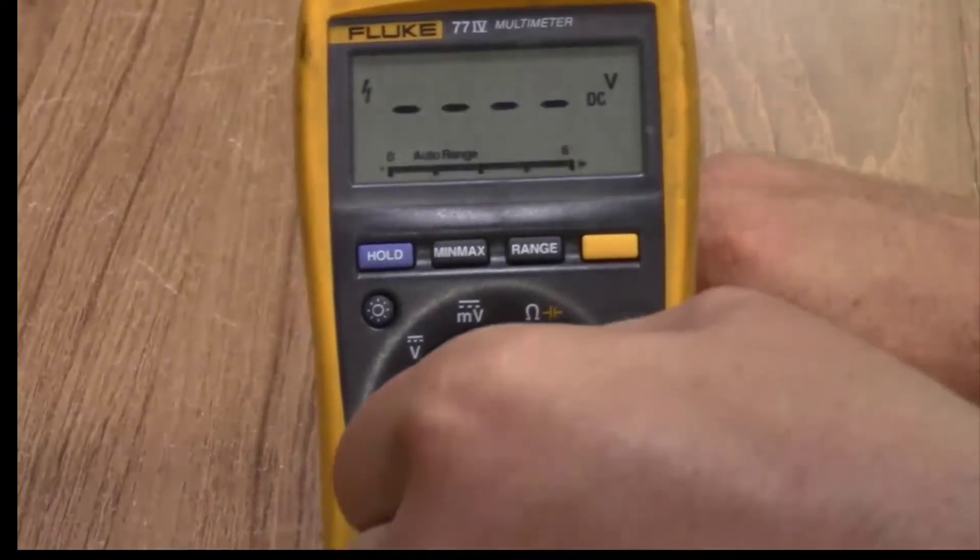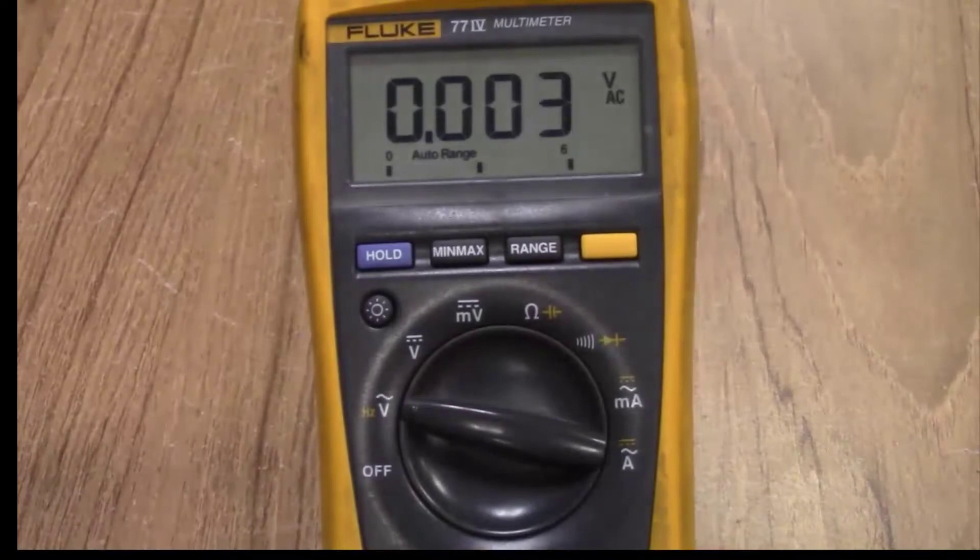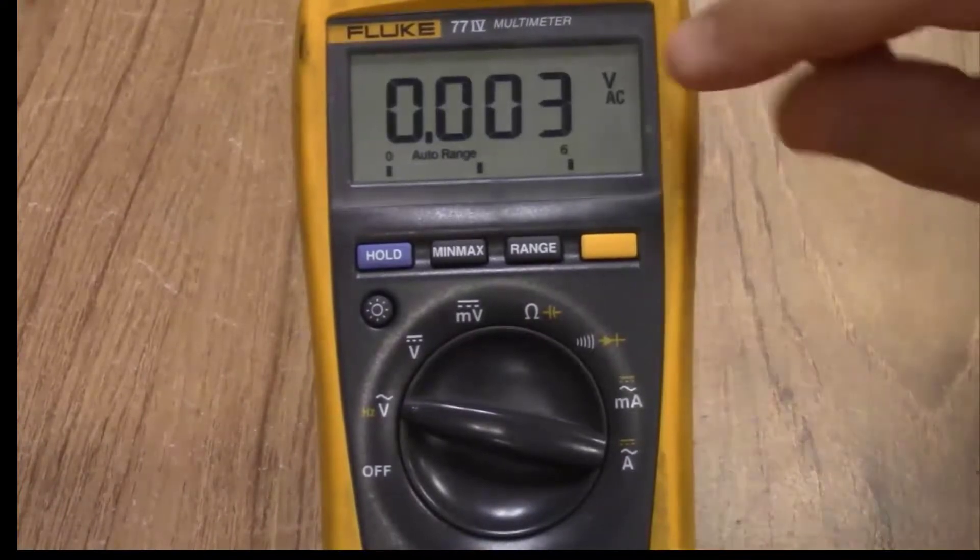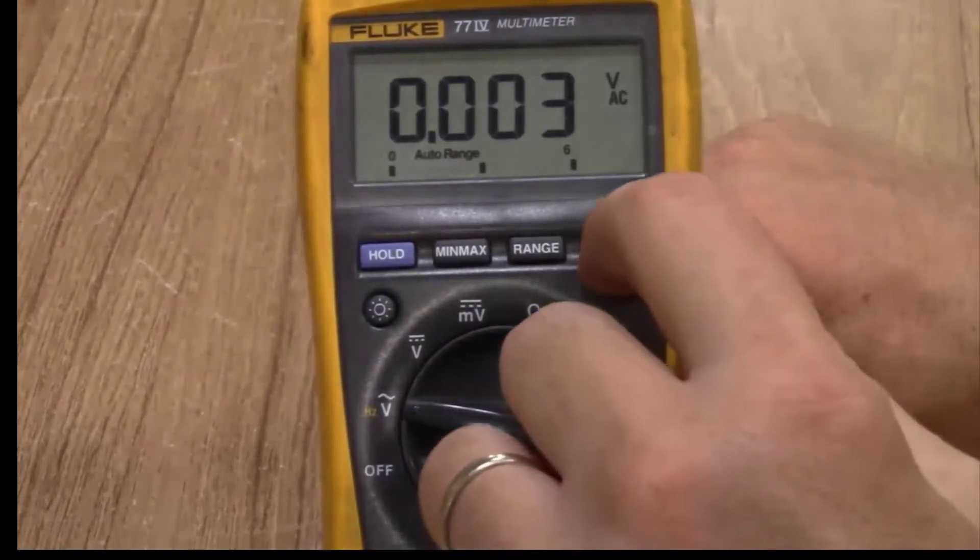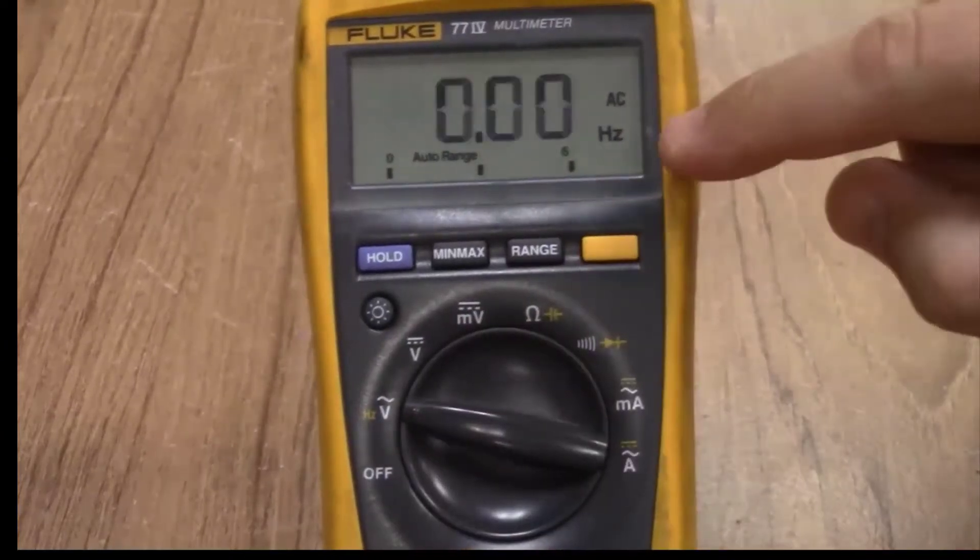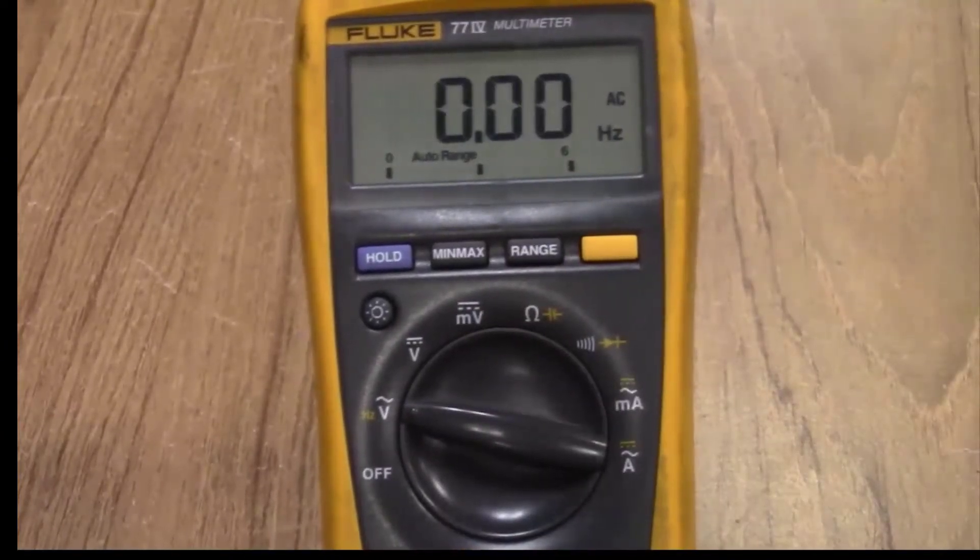And finally the voltage frequency setting here it goes to voltage. You see voltage there. If you press the yellow button it will then go and show you hertz for a frequency measurement.